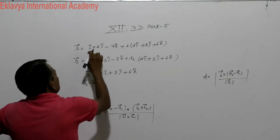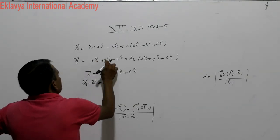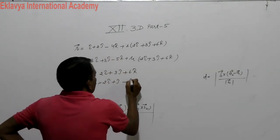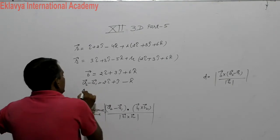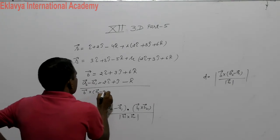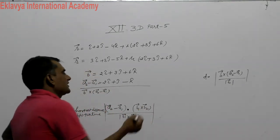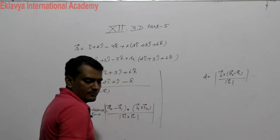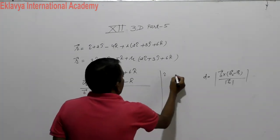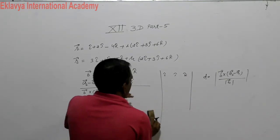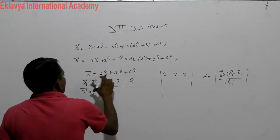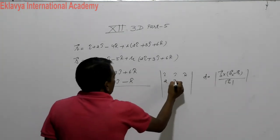For parallel lines, B vector is 2i plus 3j plus 6k. We compute A2 minus A1: (3i minus i) = 2i, (3j minus 2j) = j, and (minus 5k plus 4k) = minus k. So A2 minus A1 equals 2i plus j minus k.